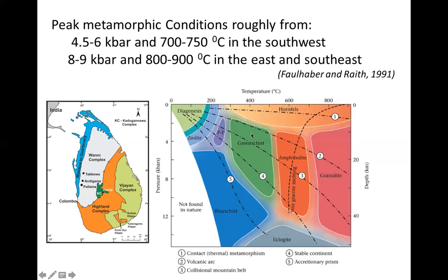The minerals appearing in these different categories differ. In greenschist facies we have low-grade mica-type minerals such as muscovite and phlogopite. As temperature increases, the rock converts into different minerals — for example, amphibole or hornblende. Hornblende is one type of amphibole; biotite also appears in this facies.